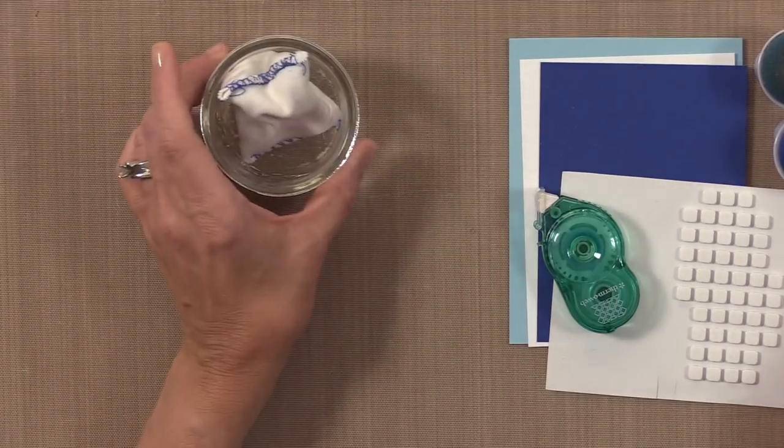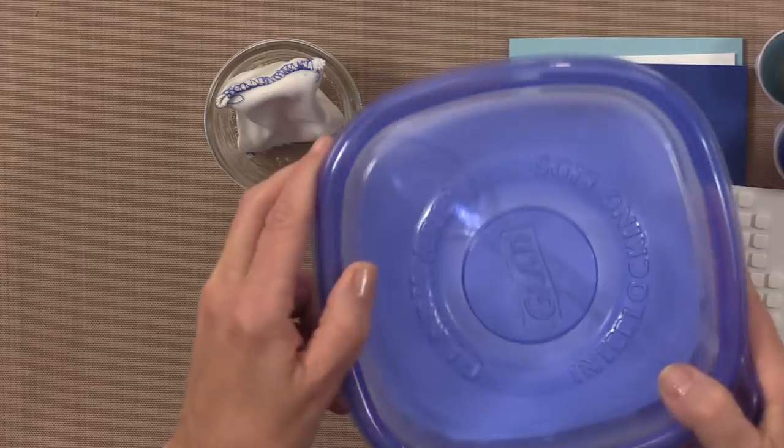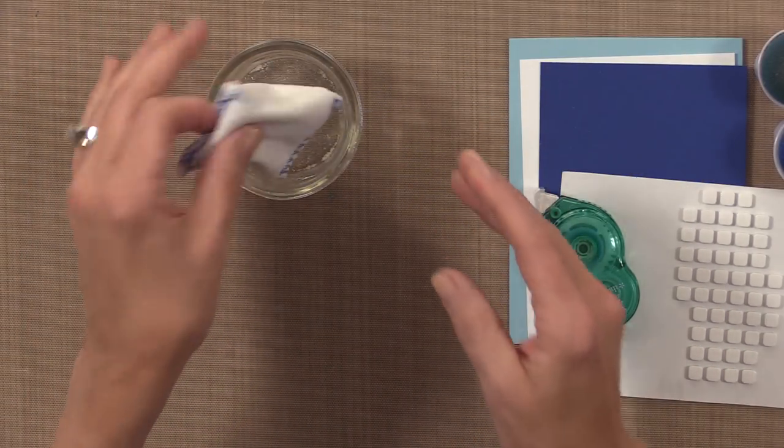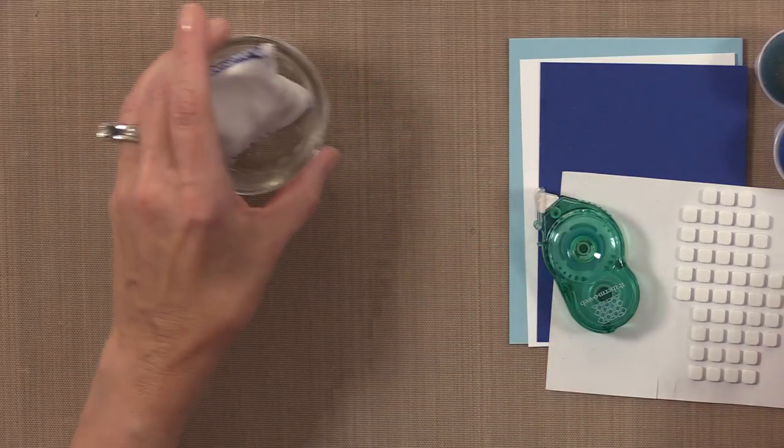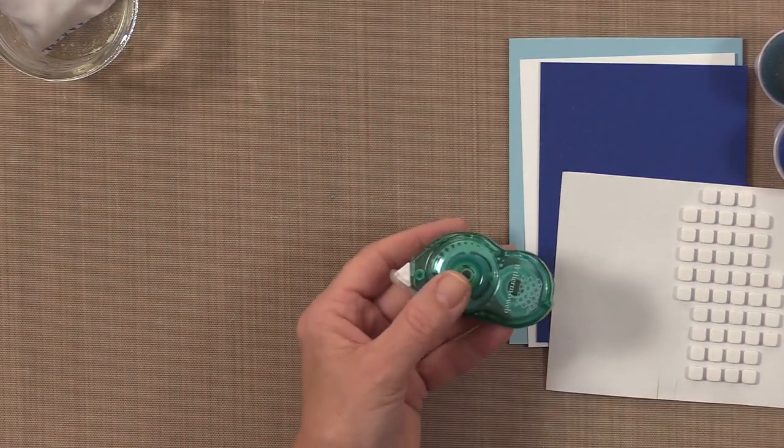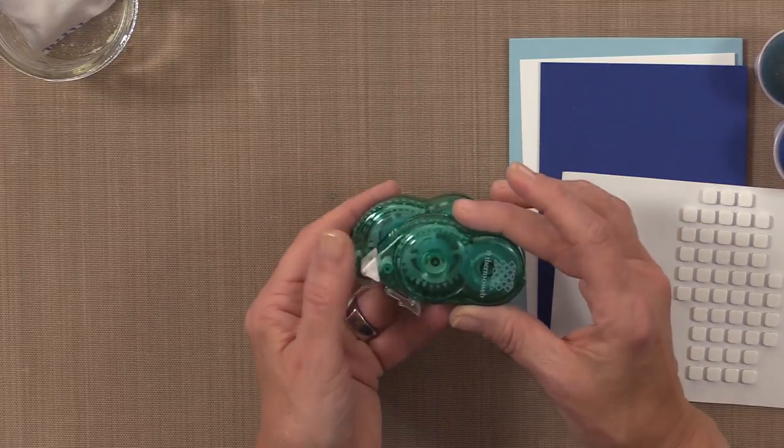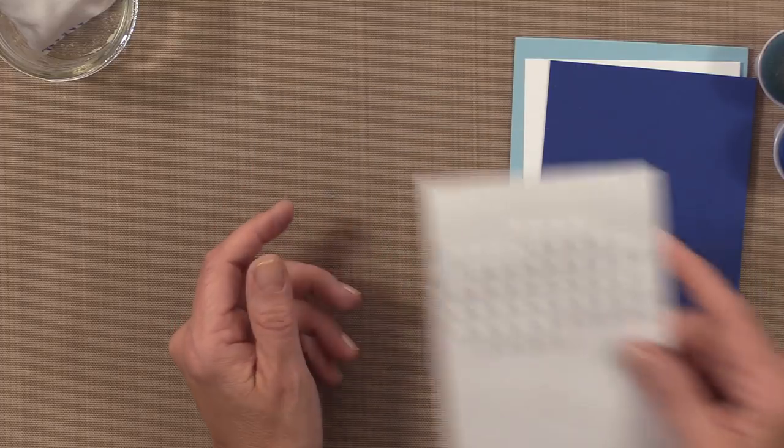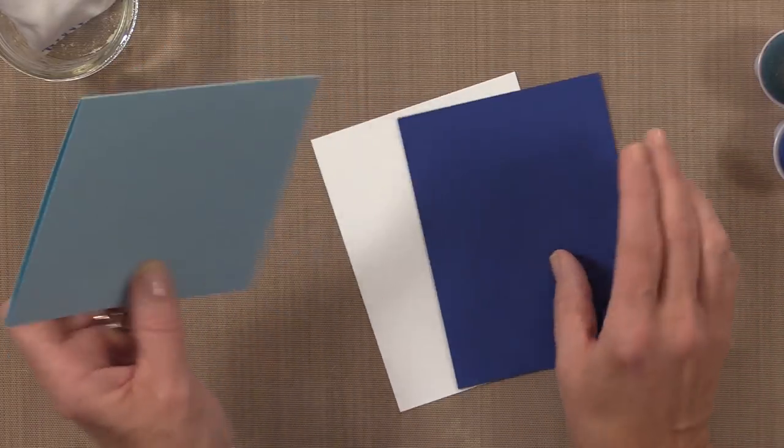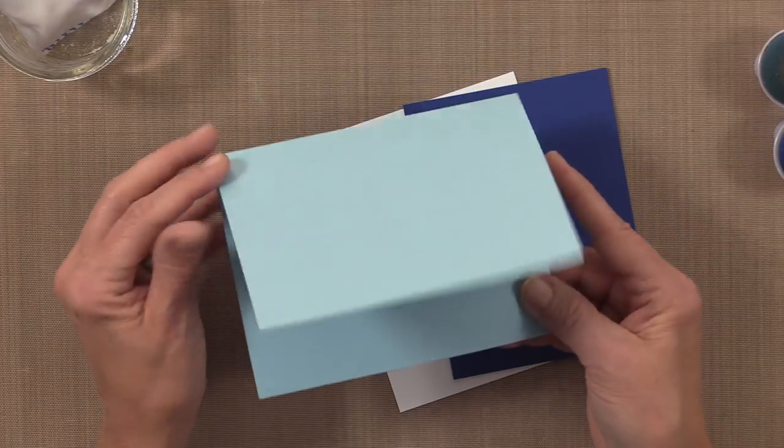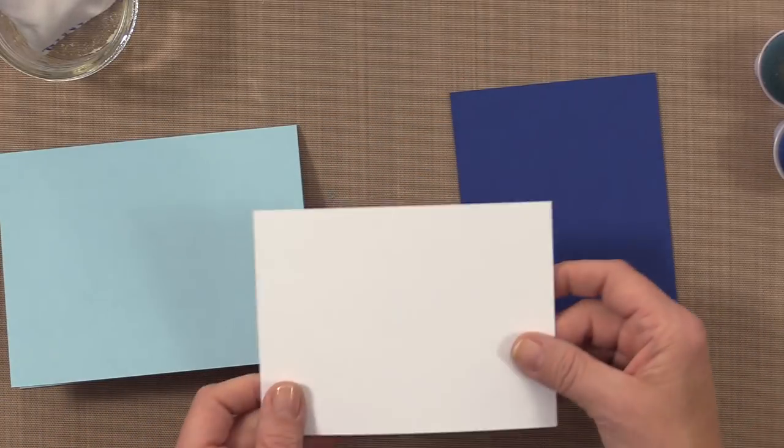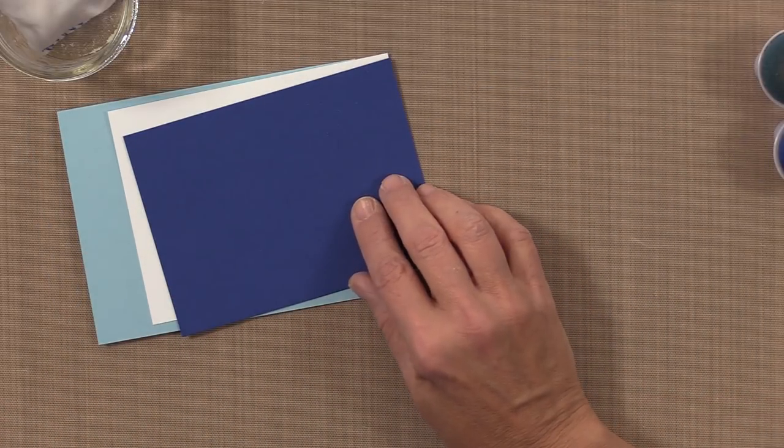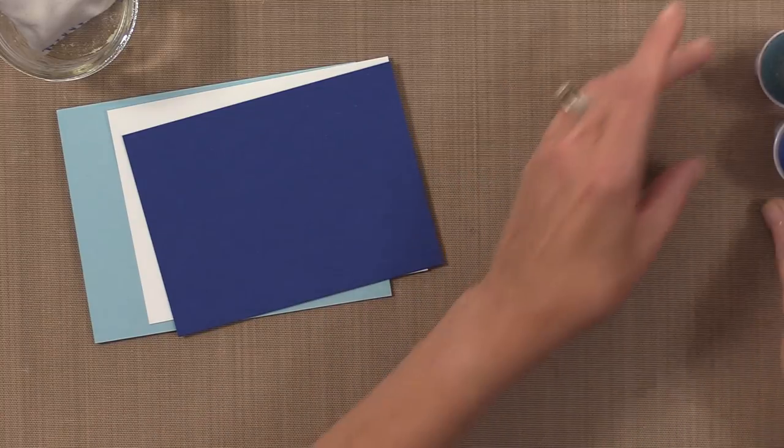Then I'm going to use some Embossing Powder. I have a big container of Gina K Designs Fine Detail White because I use it so much. I'm also going to use the Embossing Magic Pad, some tape, Thermo Web Sticky Dot Runners, and foam squares. For cardstock, I've got Ocean Mist for the card base, white layering weight, blue denim, and a few white pieces to stamp on.